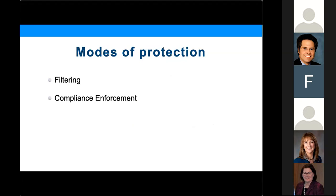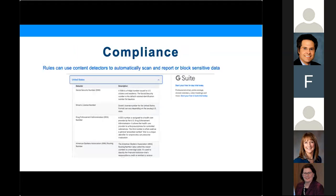On compliance: how do you prevent PII — a credit card number or a social security number — from being sent out? There are compliance rules you can set up. This example is with G Suite. You can actually turn on detection for social security numbers and driver's license numbers. They have a set of rules built into the system to recognize whether those are in the email. If it finds a number pattern matching a social security number or credit card number, it can tag that email, bounce it back to the user, or prevent it from going out. You can set how much control you want over it.